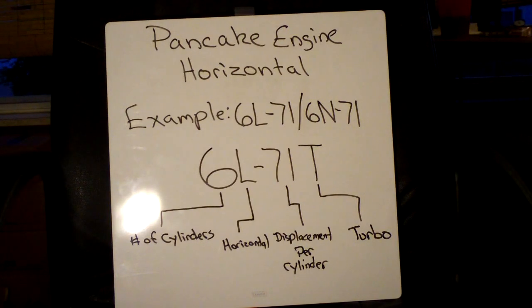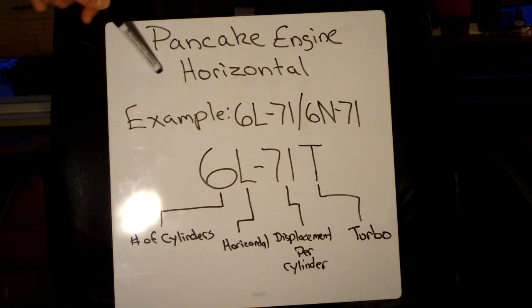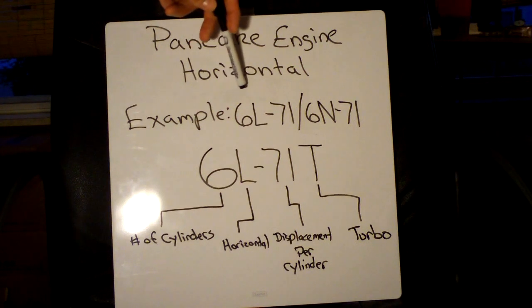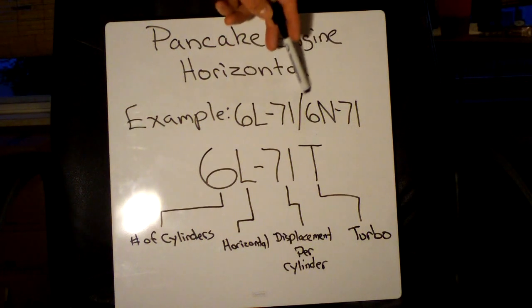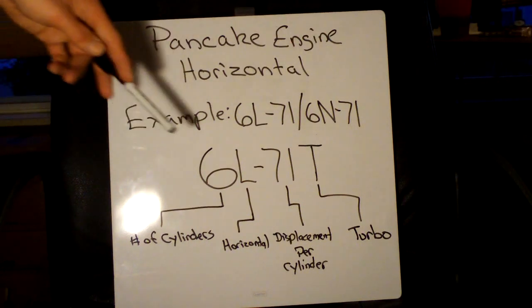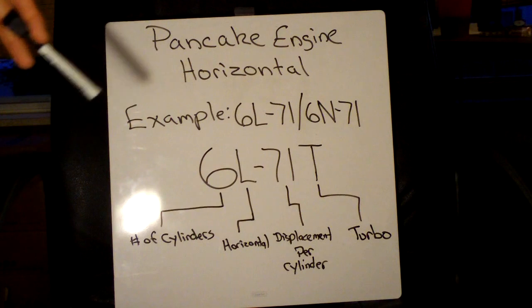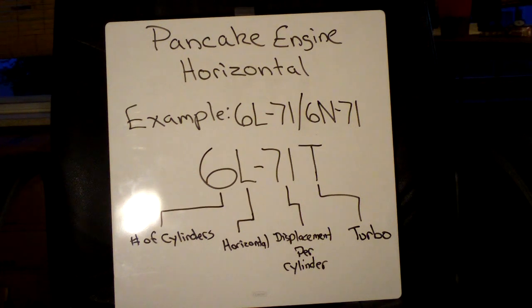All right, the last engines I'd like to talk about in the Detroit Diesel two-stroke engine codes are going to be what they call the pancake engines or the horizontally opposed or under-floor engines. Now basically the codes you're going to see for these are going to be 6L71 or 6N71, and basically they pretty much break down just like the 6V92 or the 453 or any of those.